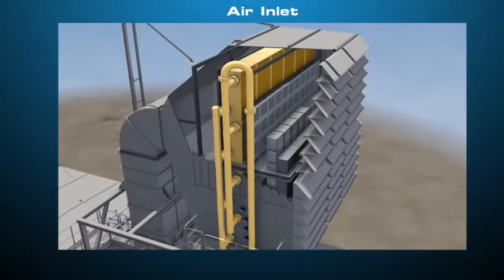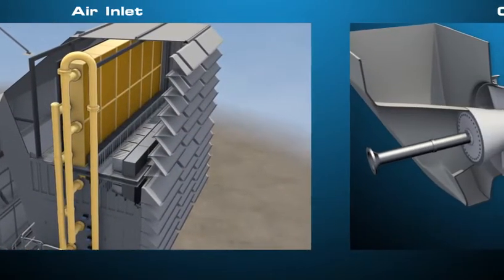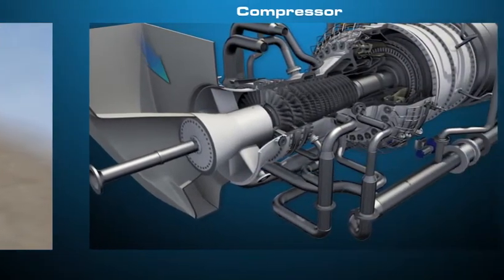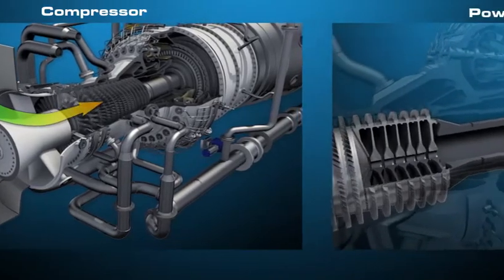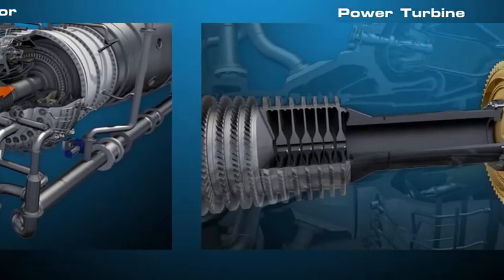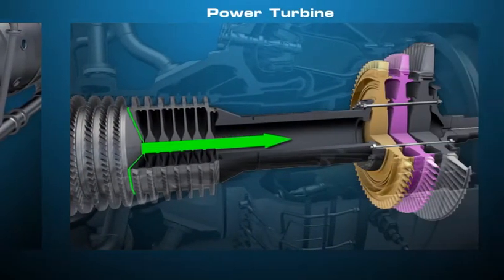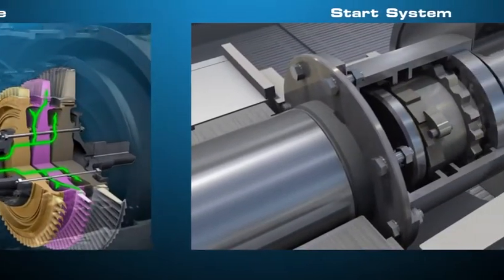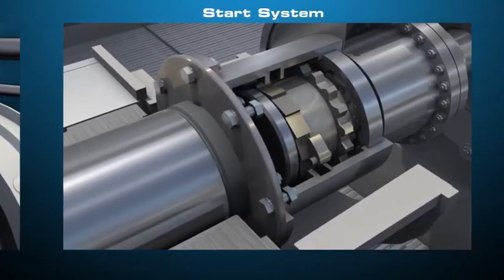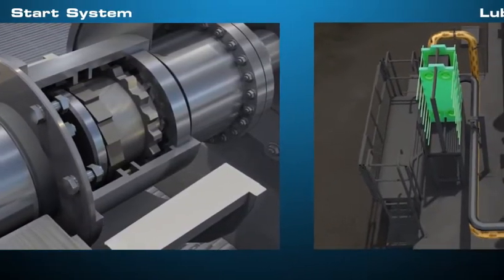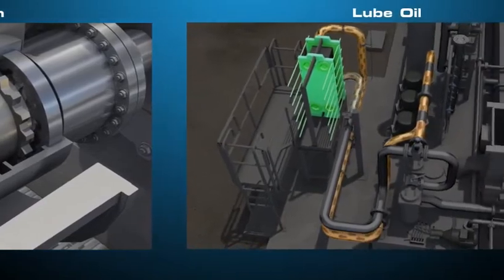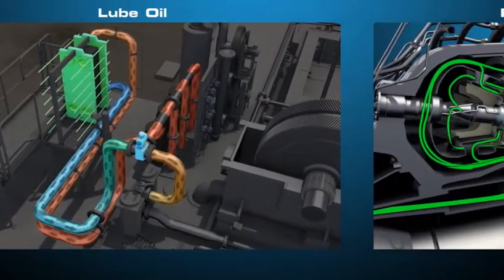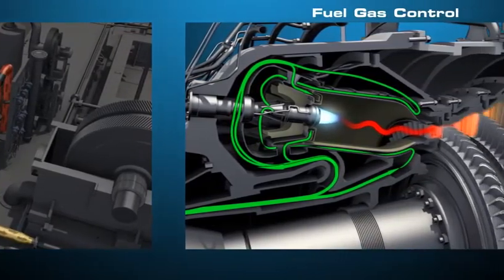Main turbine systems are covered. They include the inlet system, compressor, power turbine, start system, lube oil, and fuel gas controls.